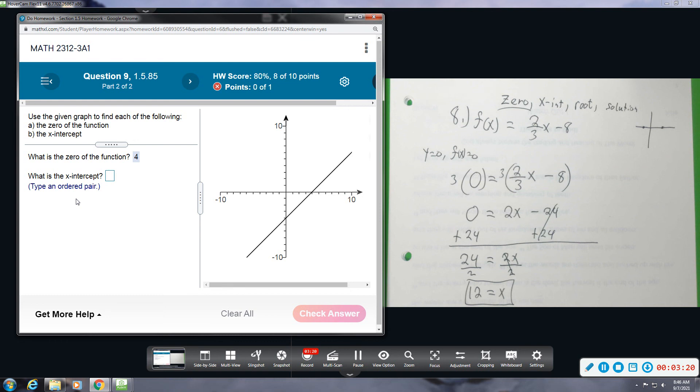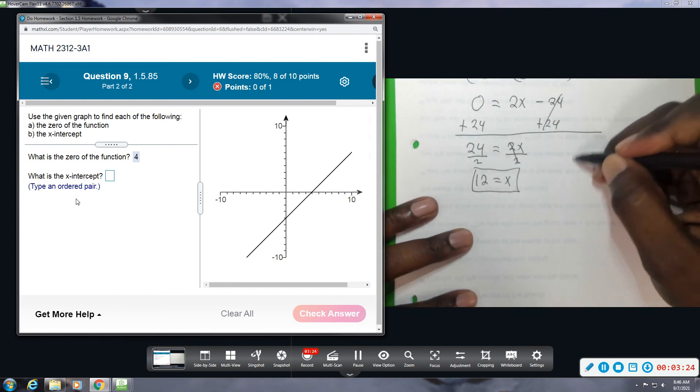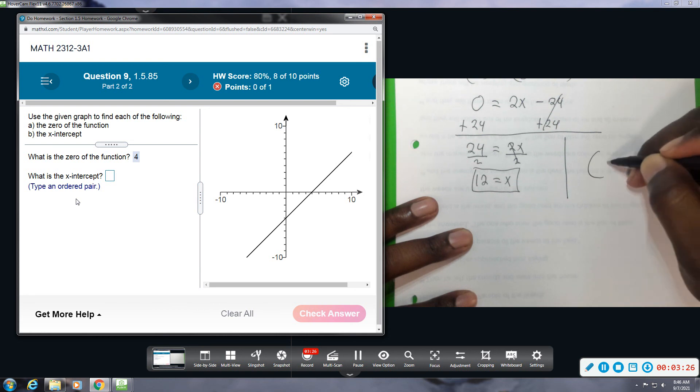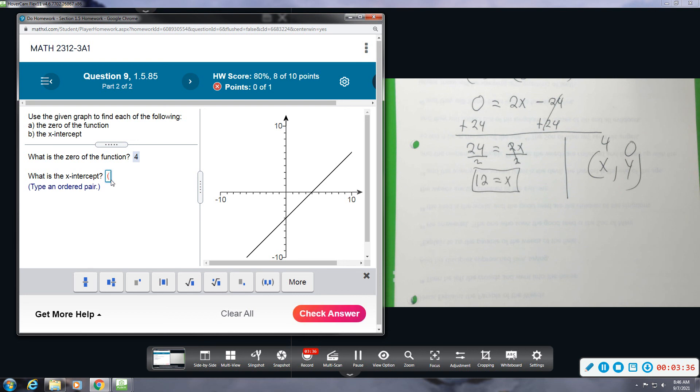X-intercept, you're just going to type it as an ordered pair. Whenever you type the x-intercept, remember you type the ordered pair: x coordinate first and then y. Well, the y value is zero and we just found out that the x was four, so we want the ordered pair four zero: four comma zero.